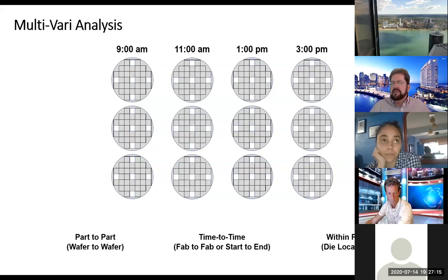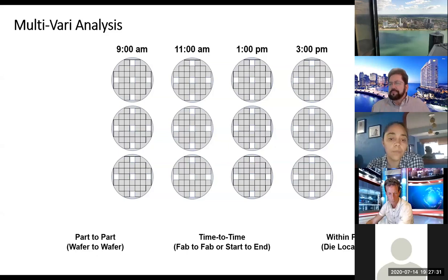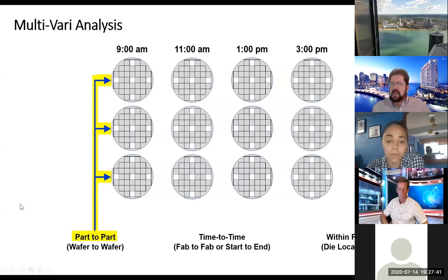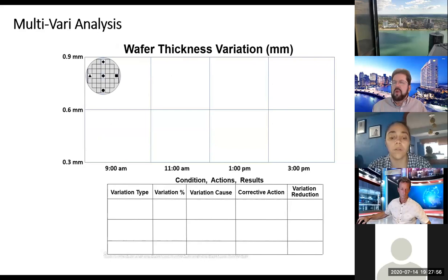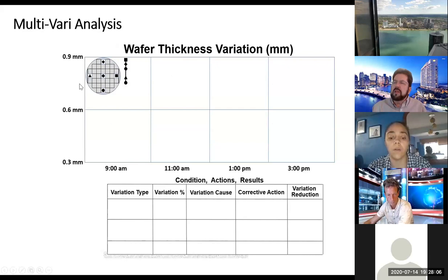Let's go into the first round of early clue-generating tools: the multi-vari analysis. Here we're looking at the manufacture of IC wafers. We're taking three samples at 9 AM, 10 AM, 1 PM, and 3 PM. We're testing five different locations on each wafer. We're looking at part-to-part, time-to-time (temporal), and within-part variation. This is how we set it up, but let's see how we'd run this on a chart. Here's what your wafer looks like, and we have a symbol for each location. The values range from about 0.78 to 0.9 millimeters — so you're looking at wafer thickness at each location.